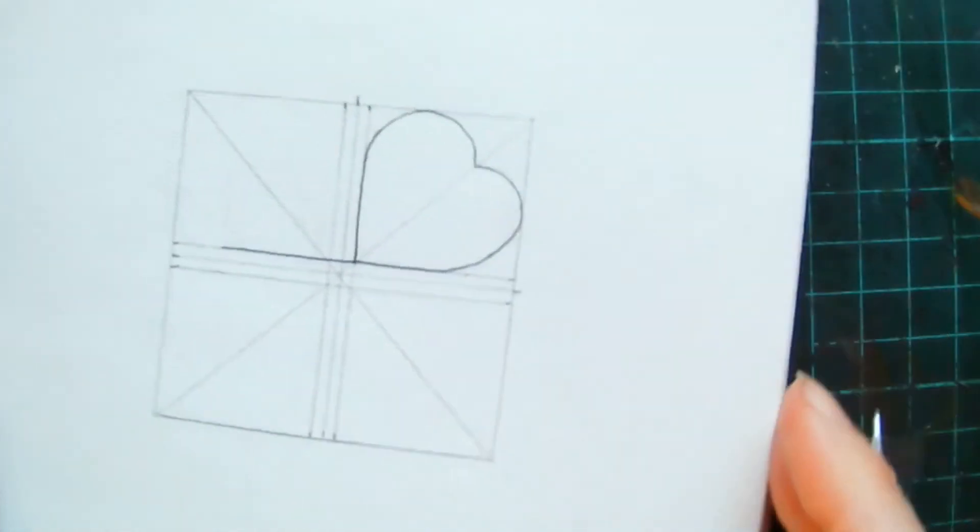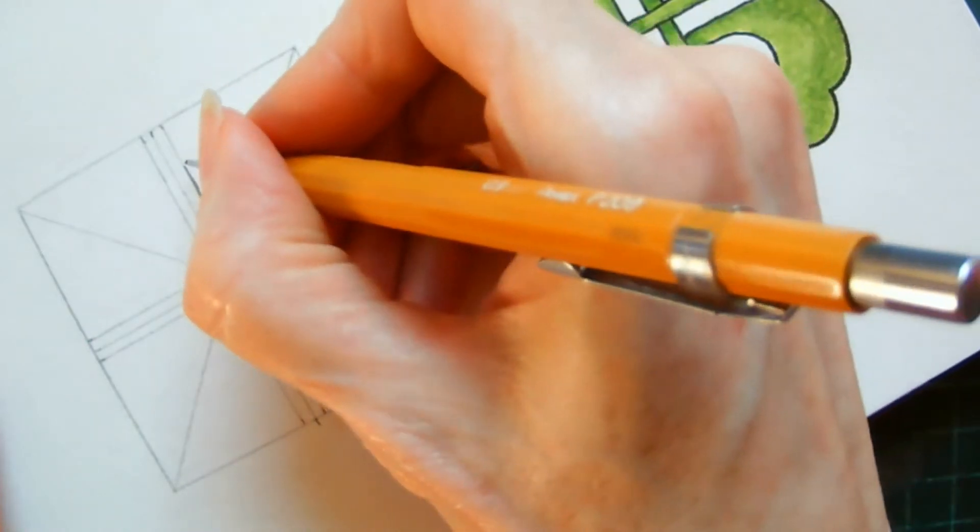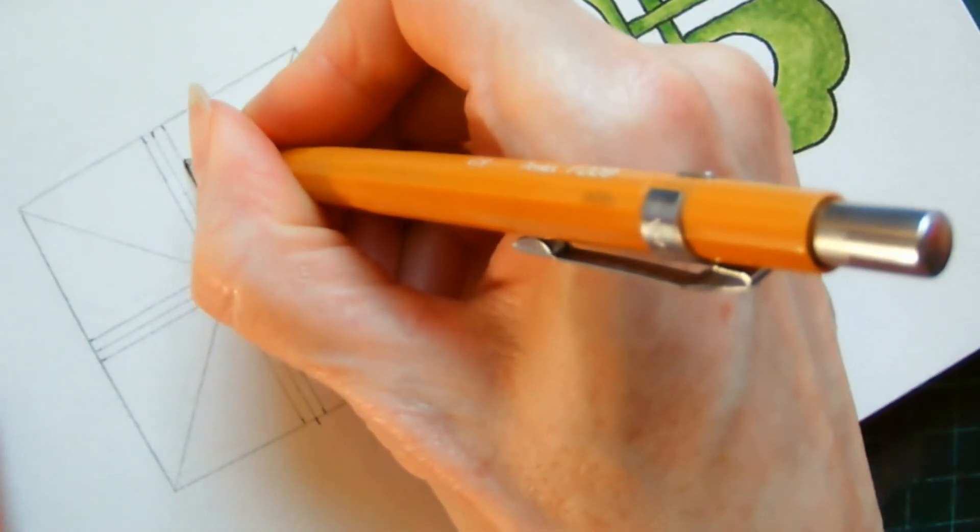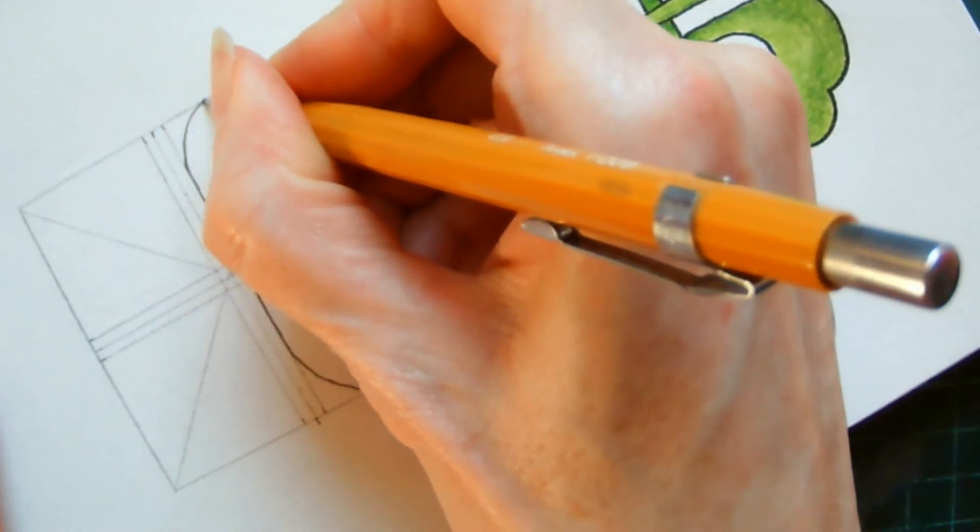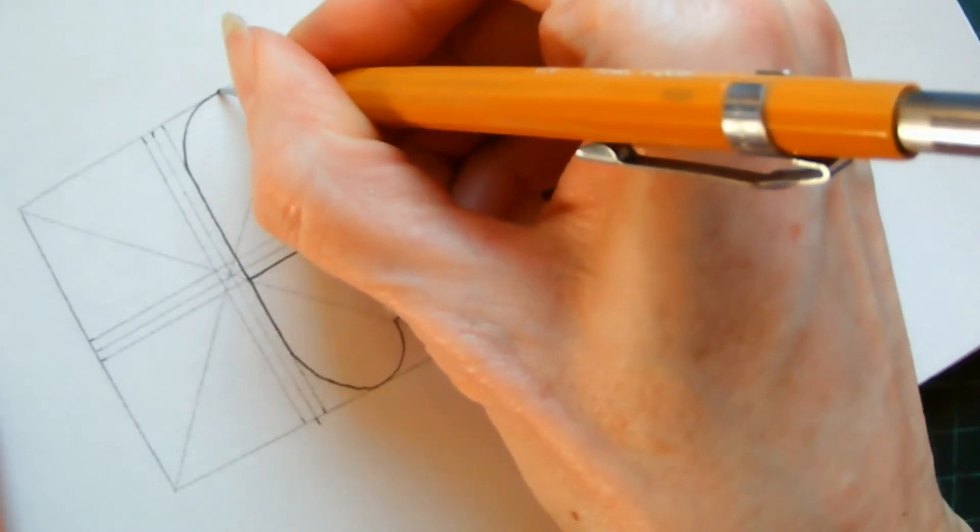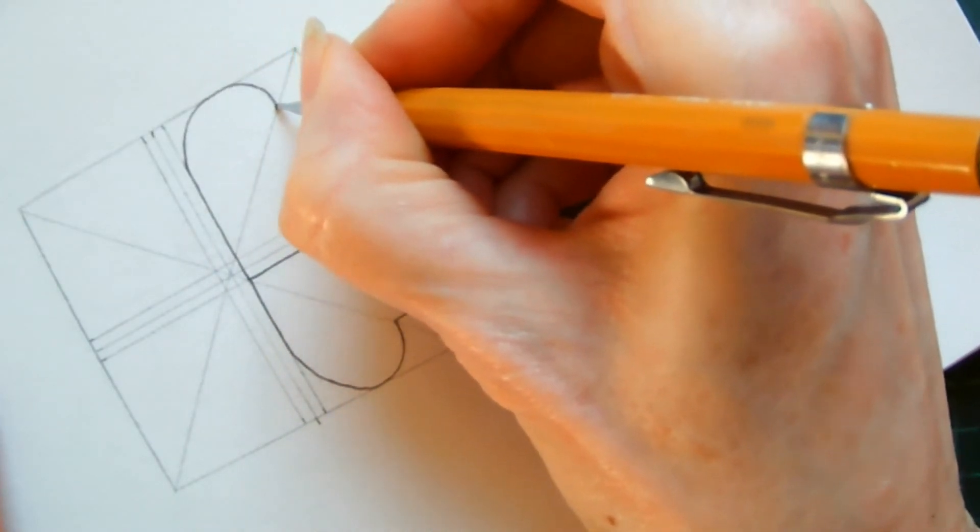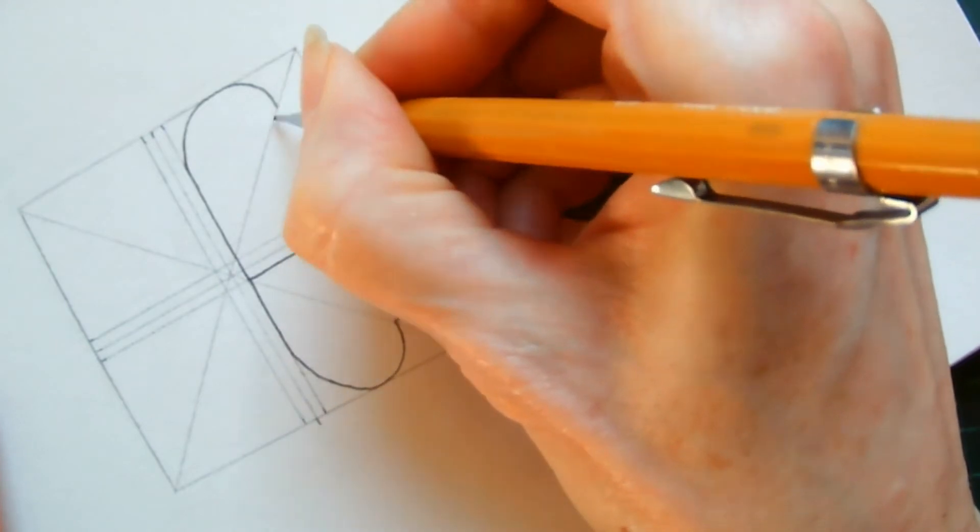And you're just going to repeat exactly the same motion. So a little curved line up to the outer edge, now a curved line back in and meeting the point of that line meets this guideline.